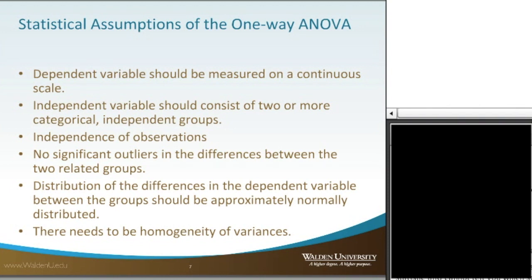With all tests of means, there should be no significant outliers in the difference between the groups. The reason you don't want outliers is because they really do throw off your analysis quite a bit, especially if you have a smaller sample size of say 30, 40, or 50, and one participant is way out there. So when you do a descriptive statistical analysis and look at a scatter plot, box plot, or histogram, you want to see if there are any outliers and then consider removing them from your data set.